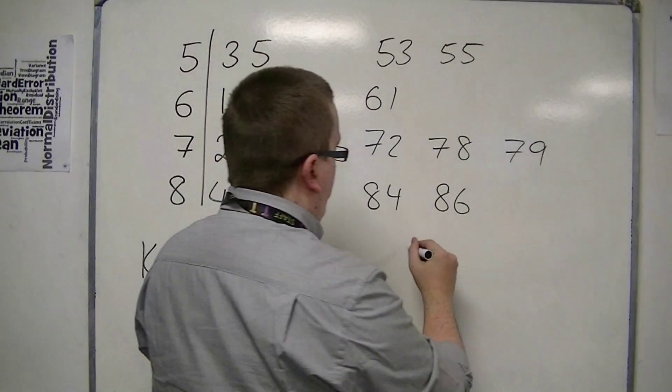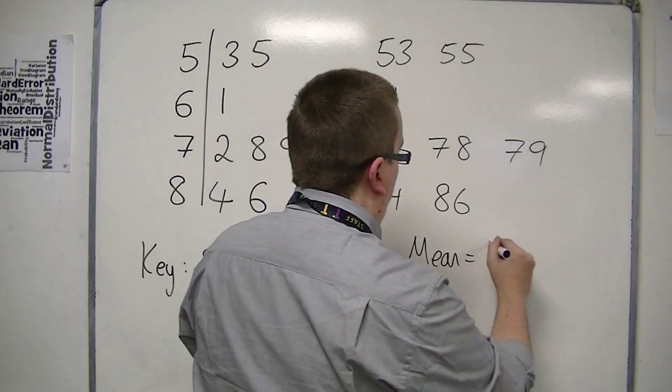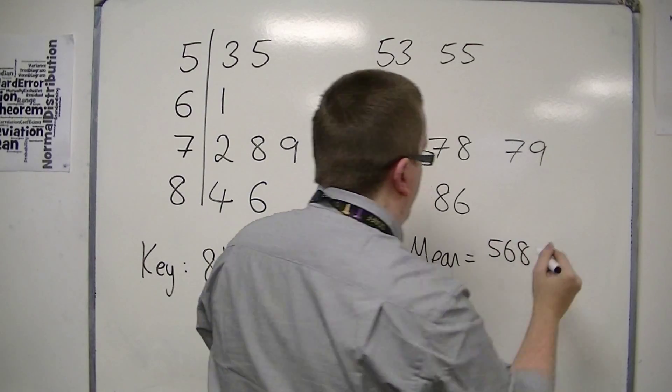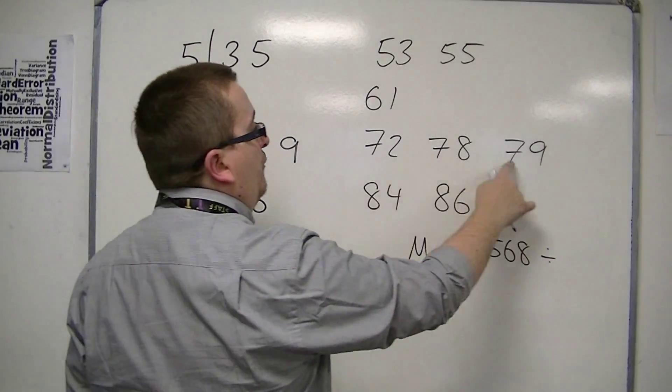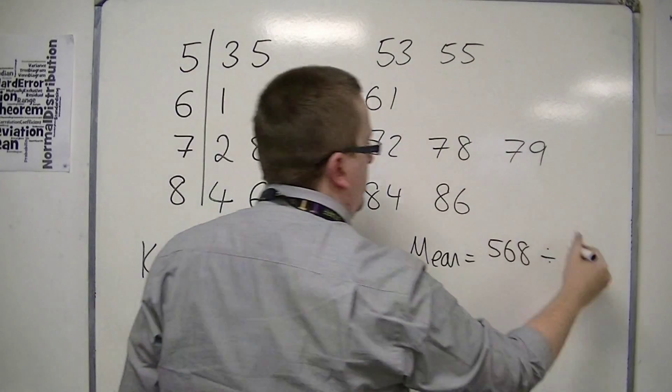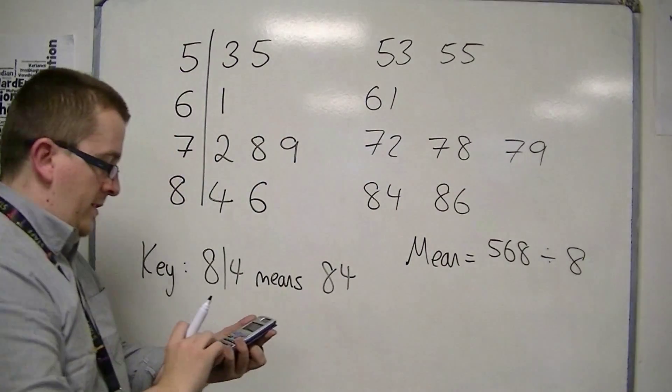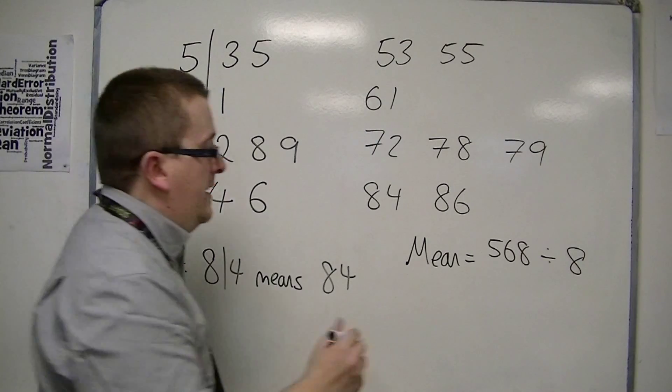Which is 568. So, the mean is 568 divided by how many there are: 1, 2, 3, 4, 5, 6, 7, 8. So, 568 divided by 8 is 71.